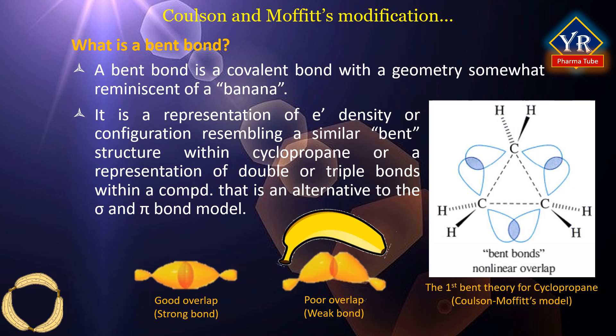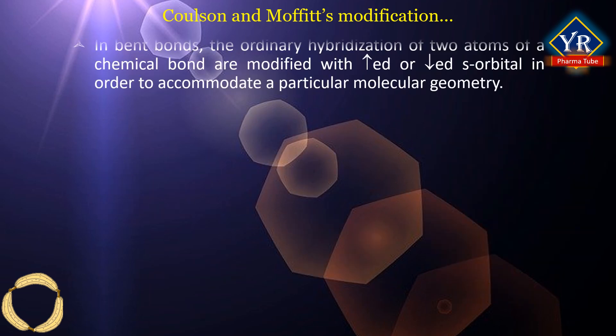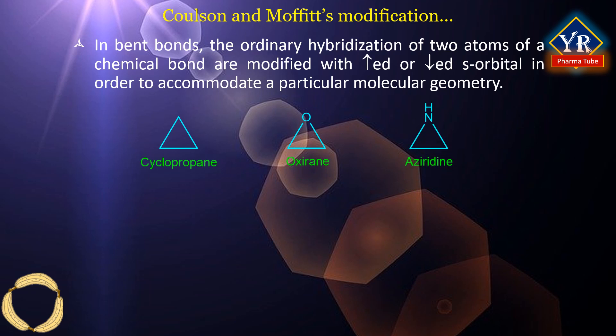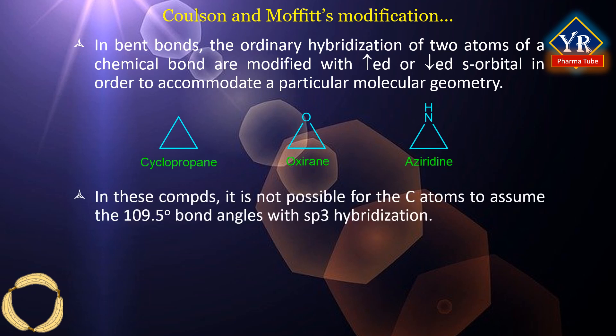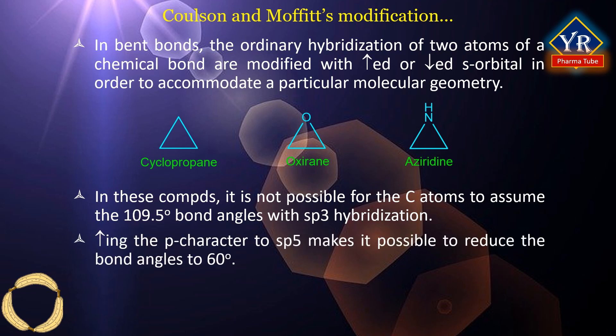The figure shown here is one of the first bent bond theories for cyclopropane — the so-called Coulson-Moffitt model. Bent bonds are a special type of bonds in which the ordinary hybridization state of the two atoms making up a chemical bond are modified with increased or decreased S orbital character in order to accommodate a particular molecular geometry. They are found in strained organic compounds such as cyclopropane, oxirane, and aziridine. In these compounds, it is not possible for the carbon atoms to assume the 109.5 degree bond angles with standard SP3 hybridization. Increasing the P character to SP5 — that is 1/6 S density and 5/6 P density — makes it possible to reduce the bond angles to 60 degrees in cyclopropane.